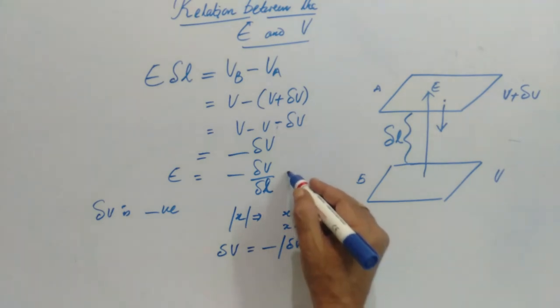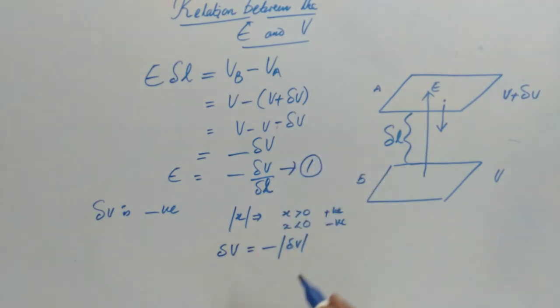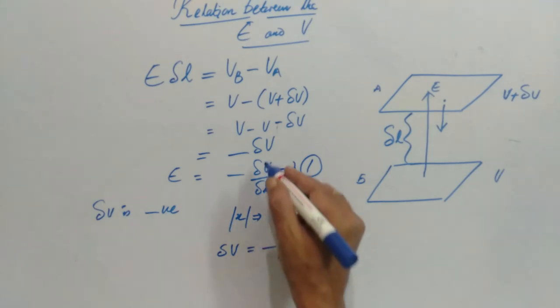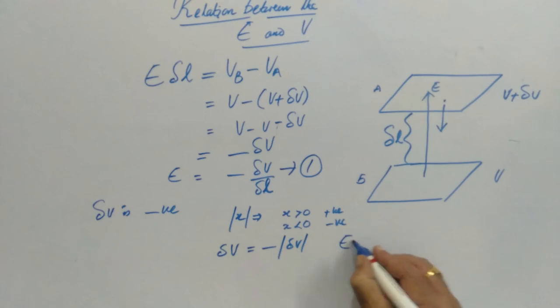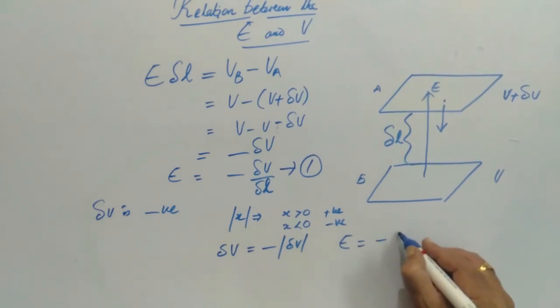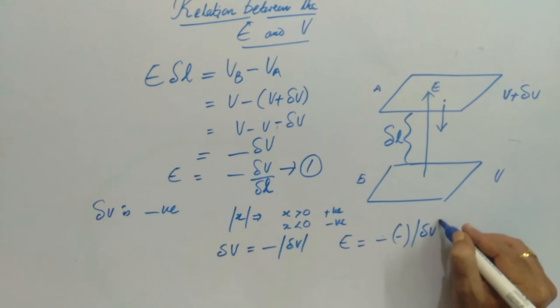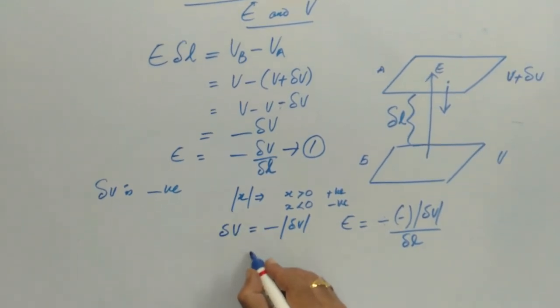By substituting this in the equation—let's consider this our first equation—substituting the value of delta V in equation 1 gives us minus delta V by delta L. This minus into minus becomes plus, and hence the final relation is E is equal to delta V by delta L.